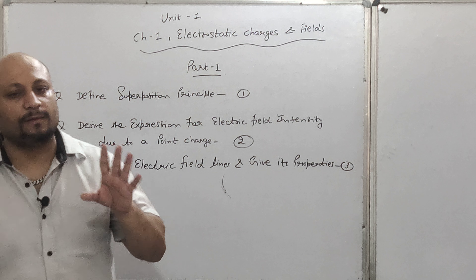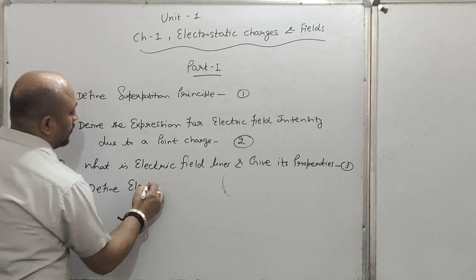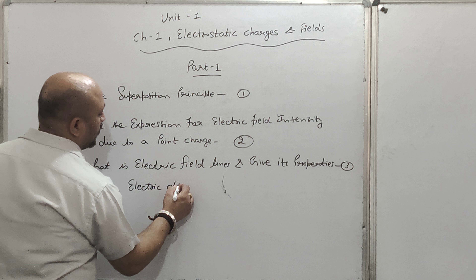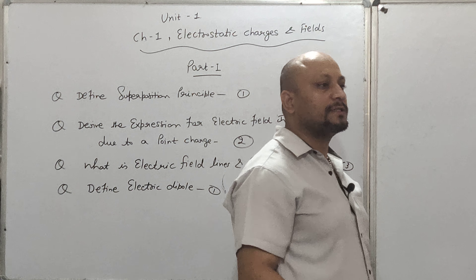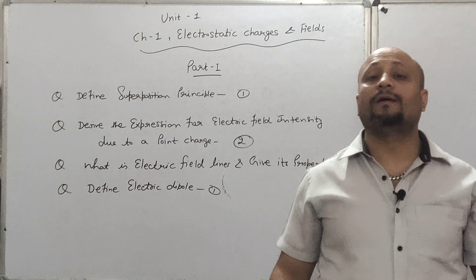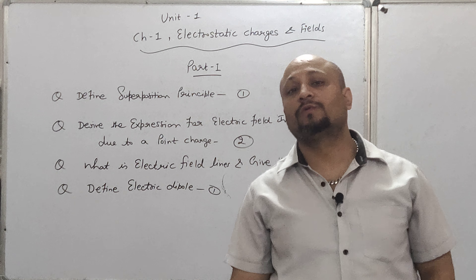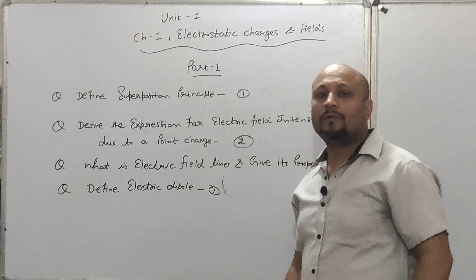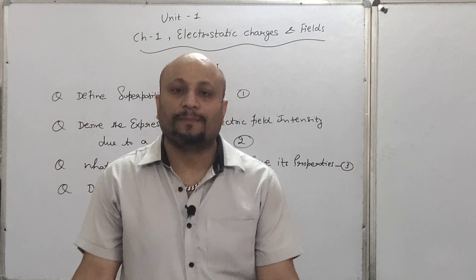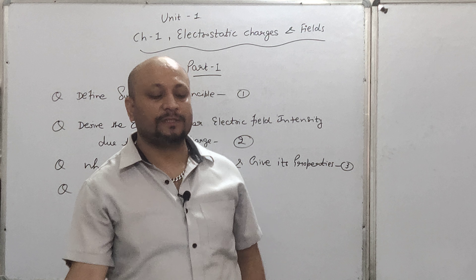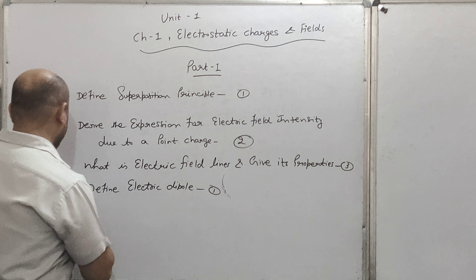Next important topic है Electric Dipole। एक number का question: Define Electric Dipole। Definition: 'An electric dipole consists of a pair of equal and opposite point charges separated by a small distance 2A।'